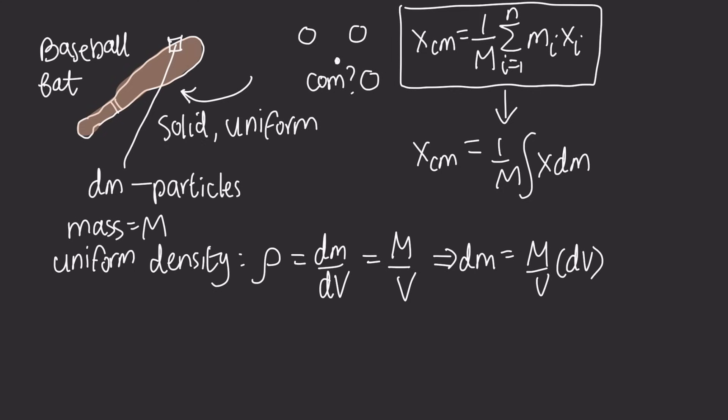And if we substitute that back into the integral we had, we get x center of mass equals 1 over M times the integral of x times M over V times dv. And that is just the integral of x times dv multiplied by 1 over V over here. And dv and V are just a lot easier to find than dm.